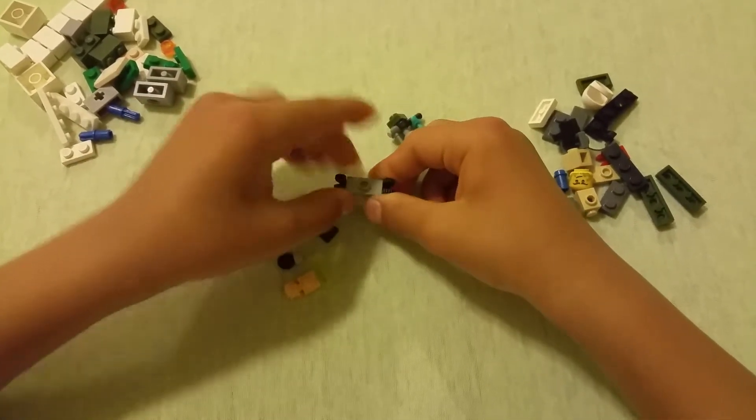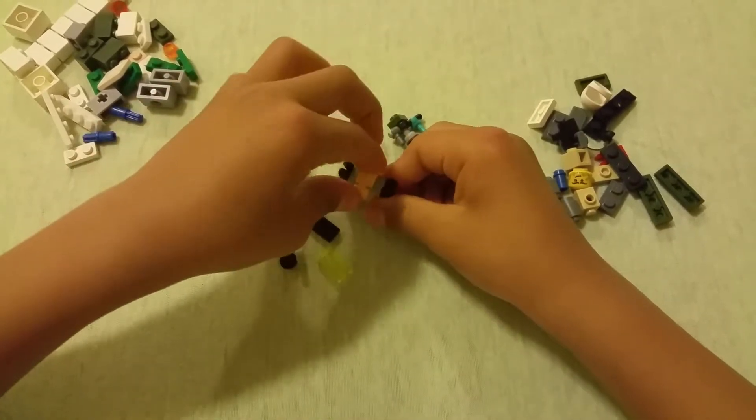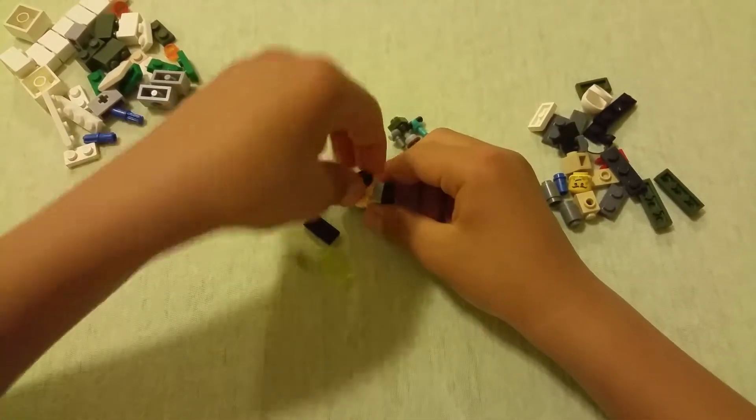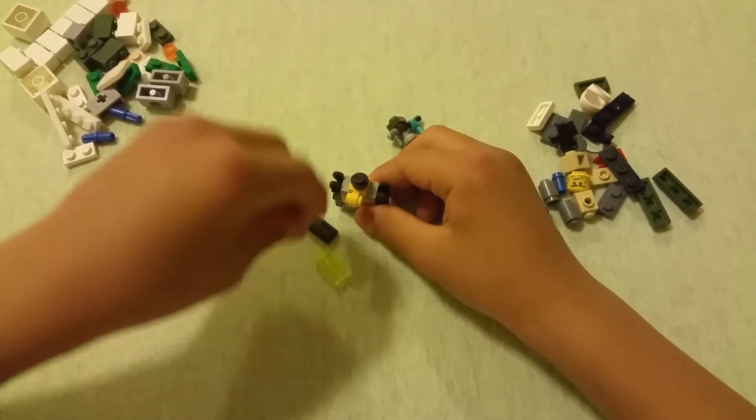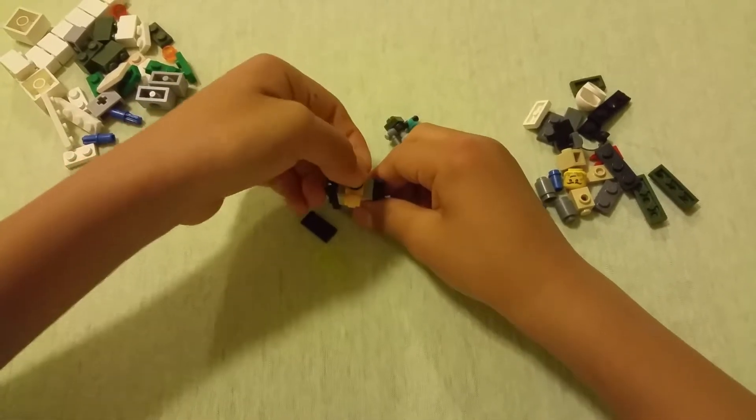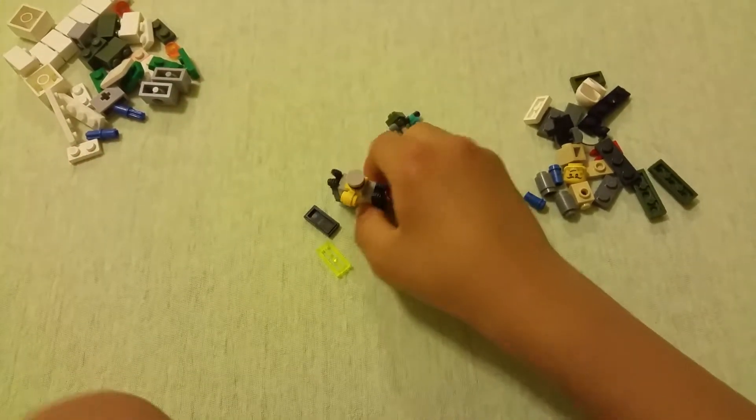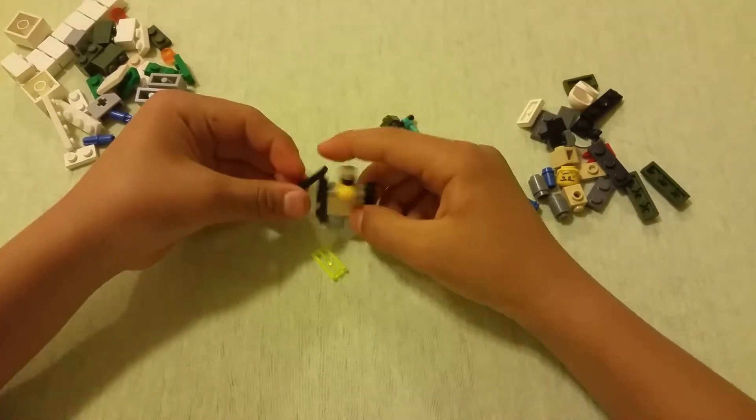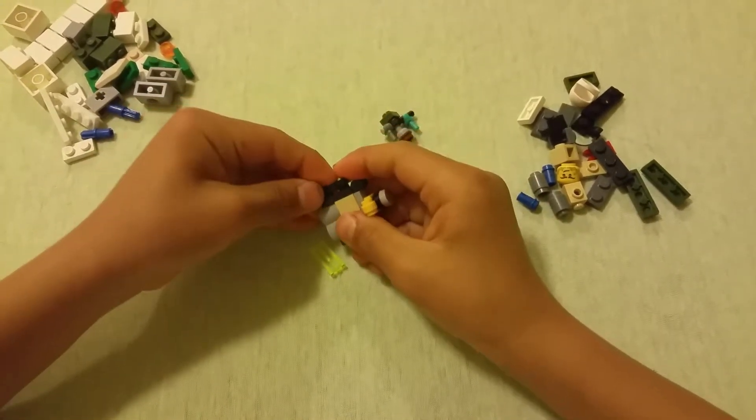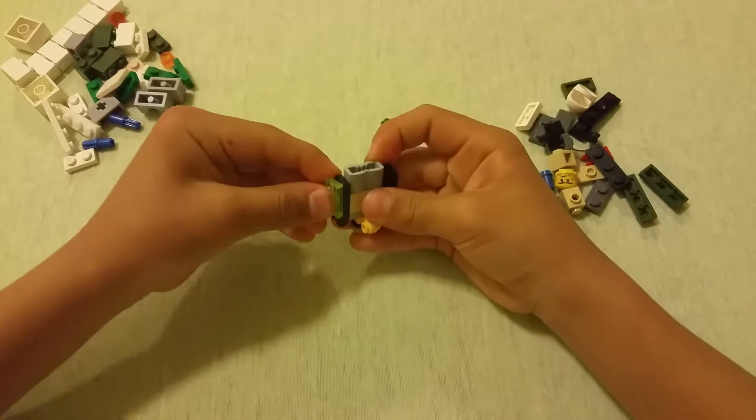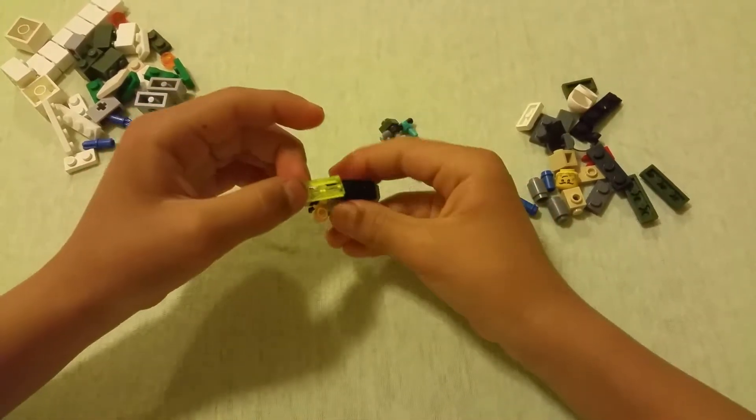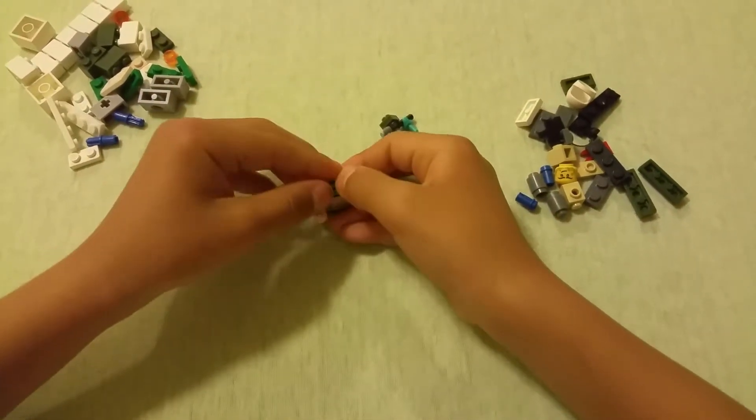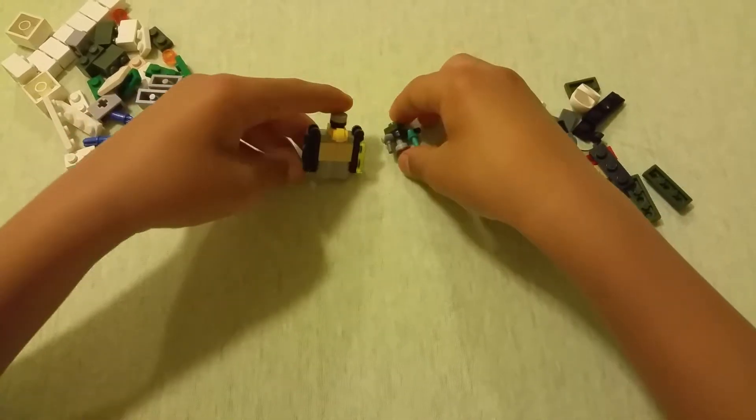For the head, a jumper plate, a plate with a circle clip for the nose, a round plate, and a round tile. For the hair with no vines, I'm just gonna do 1x2 tile in black. For the hair with all the vines, I'm doing a transparent lime green grill plate.